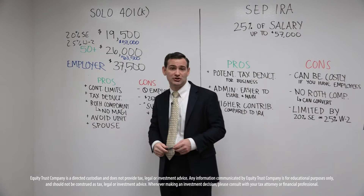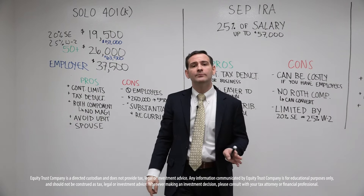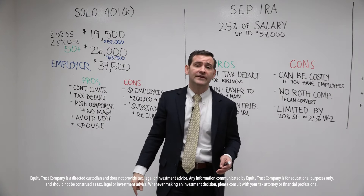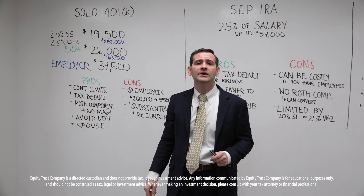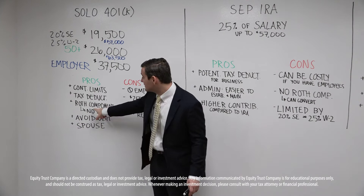Number two: tax deductions. This $19,500 or $26,000 employee contribution, plus your employer deferral, combined up to $57,000 or $63,500, can be entirely tax deductible if you choose. If you maxed out being under the age of 50 and got the full $57,000 in, you would get a $57,000 tax deduction. With a solo 401k, you can elect to make tax-deductible contributions or you can elect to make tax-free Roth contributions.